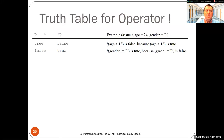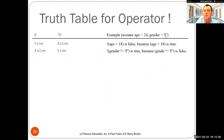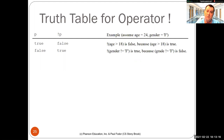We have the truth table for negation. When a Boolean expression P is true, its negation is false, and when it is false, its negation is true. Assume we have two variables: age = 24 and gender = 'F'. The negation of (age > 18) is the negation of true, which is false. The negation of (gender != 'F') — since gender is 'F', F != F is false, and the negation of false is true. Negation is always an inverse operator: true becomes false and false becomes true.